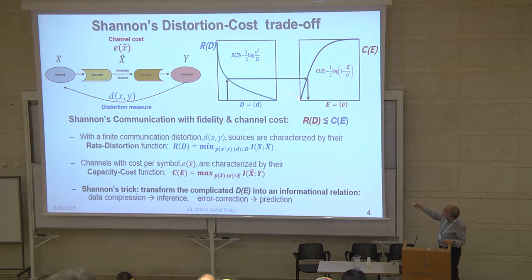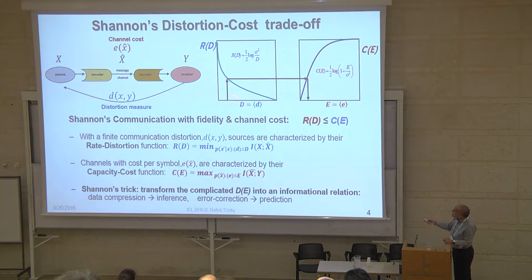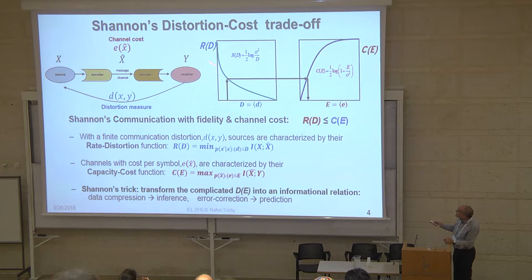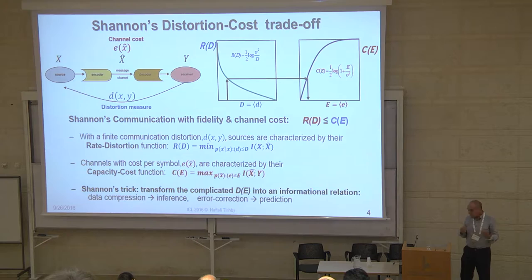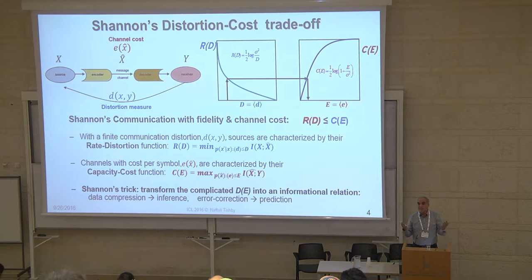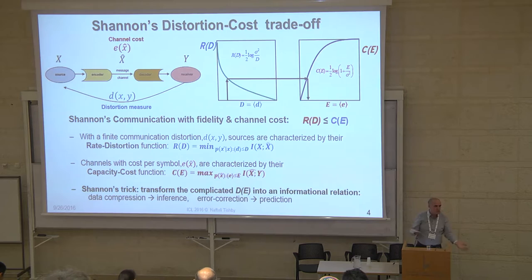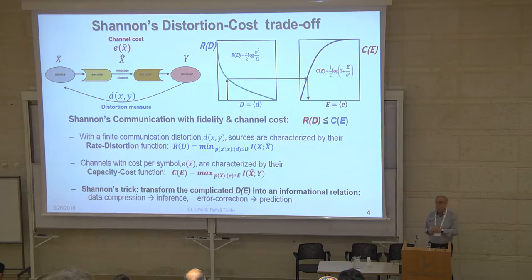Then Shannon had what I call his ingenious miracle trick: he transformed a very complicated physical question — what is the cost of transmitting at a certain distortion — into a comparison of two information-theoretic numbers. Compare the rate-distortion function to the capacity-cost function. Given a desired distortion, you go through the rate-distortion function, find the minimal capacity you need, and that gives you the minimal cost. A very complicated physical question, involving channel and source properties, is reduced to comparing two numbers.